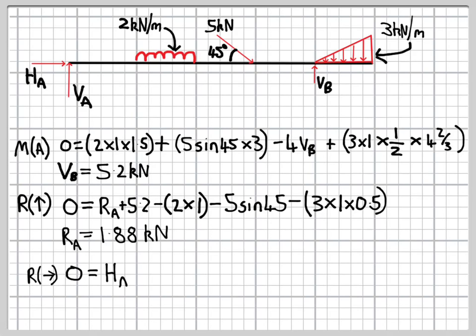Then finally, we've got horizontal forces to consider. This is easier, we've just got one horizontal force acting, that's the horizontal component of the point load. So that's 5 times cos 45. And we find that HA is minus 3.5 kilonewtons, the negative sign indicating that it's actually acting to the left rather than to the right.